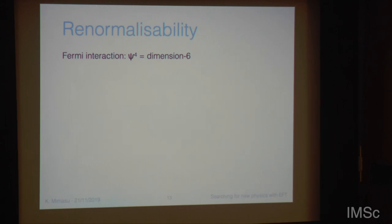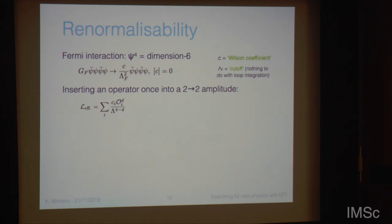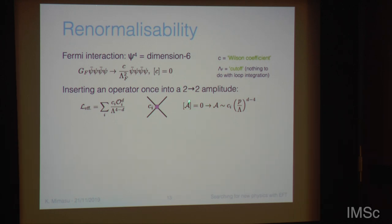The Fermi interaction — adding up the dimensions of the four fermions — gives dimension six. It's a higher-dimensional operator. Often we write it so that we explicitly take out the mass dimension of the coupling, ending up with a dimensionless parameter C called the Wilson coefficient, suppressed by some scale lambda, often referred to as a cutoff — which has nothing to do with loop integration, so don't confuse those two quantities. If you insert such an operator into a two-to-two amplitude, the amplitude scales by a power of the momentum over the scale, corresponding to how much greater than four the operator's mass dimension is.